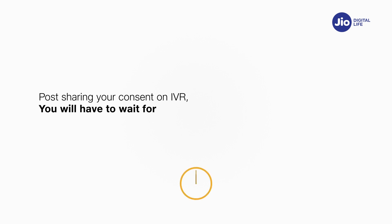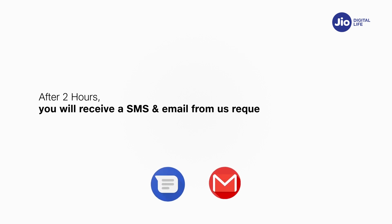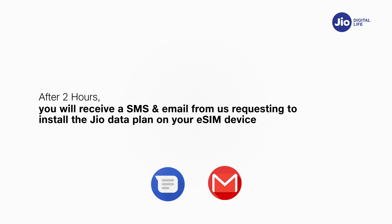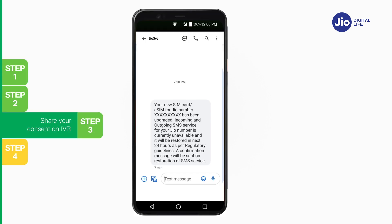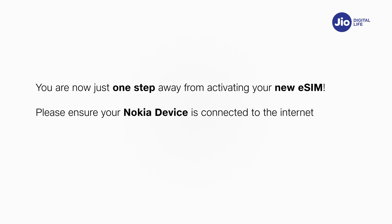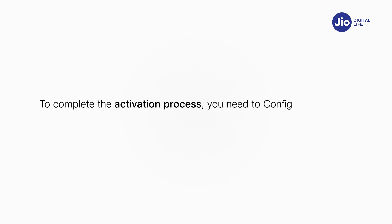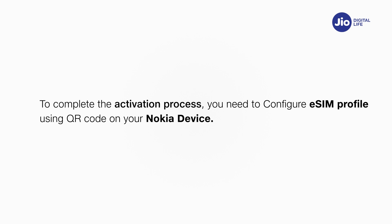After sharing your consent on IVR, you will have to wait for 2 hours while we process your request. Please note that during this period, you will be able to use all the services of the existing Jio number. After 2 hours, you will receive an SMS and email requesting you to install the Jio data plan on your eSIM device. As soon as you receive this SMS, your physical SIM will stop working and your phone will show no network. Please ensure that your Nokia device is connected to the internet using Wi-Fi or mobile hotspot during this process.